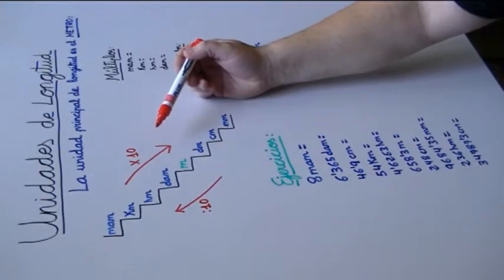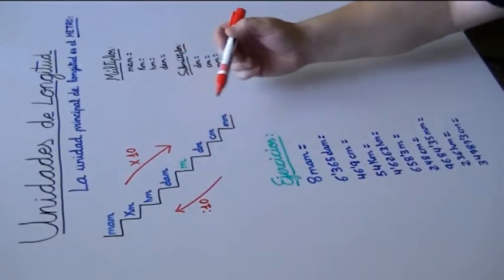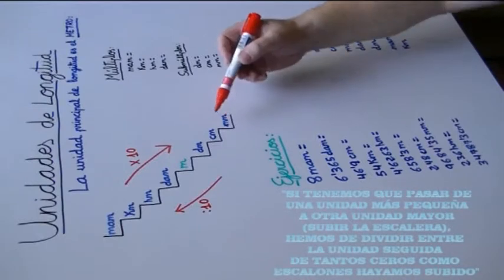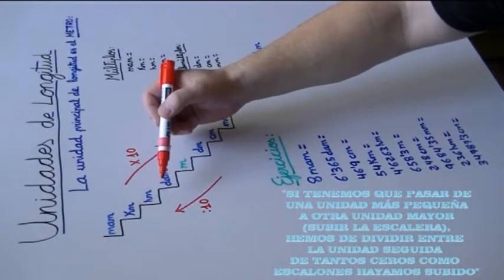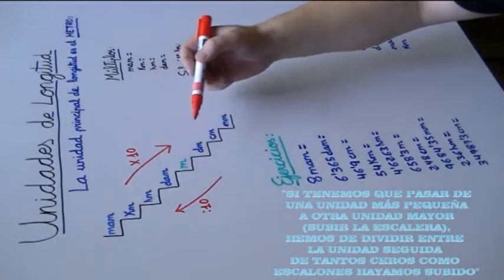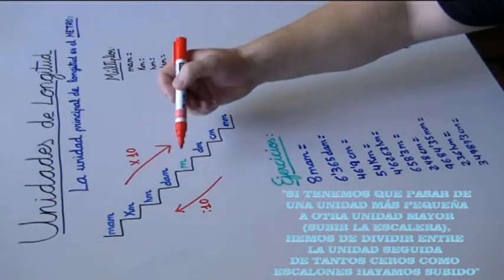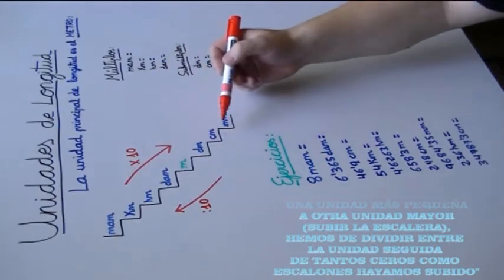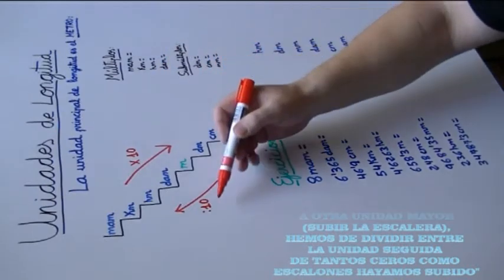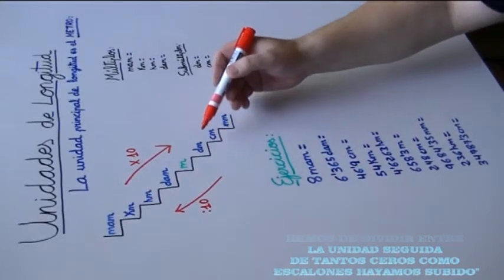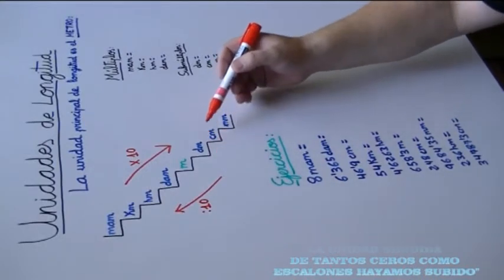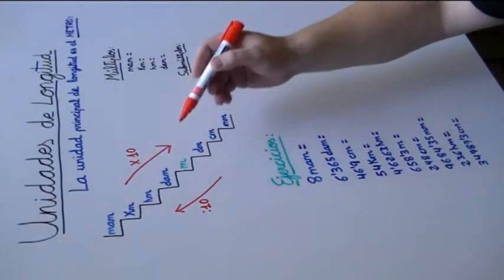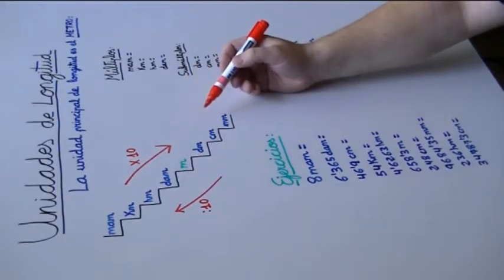Por el contrario, si tenemos que pasar de una unidad inferior o más pequeña a otra unidad más grande, entonces tendremos que subir la escalera. Y por cada escalón que subamos, tenemos que dividir entre 10. Si subimos dos escalones entre 100, tres entre 1.000, cuatro entre 10.000, y así sucesivamente.